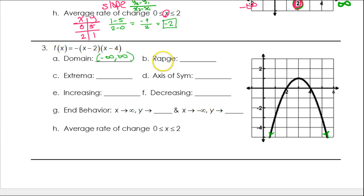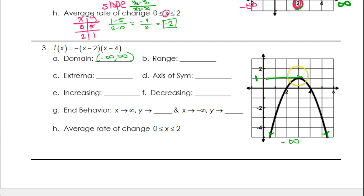The range is the y values — always do it from bottom to top, least to greatest. Down at the bottom, these are y values of negative infinity because this graph goes down forever. Now the top is right here — this is the maximum value. And looking over to the side, I see this maximum value is 1. So it's going from negative infinity to 1. That's the range, with a square bracket on the 1 to show that 1 is included.